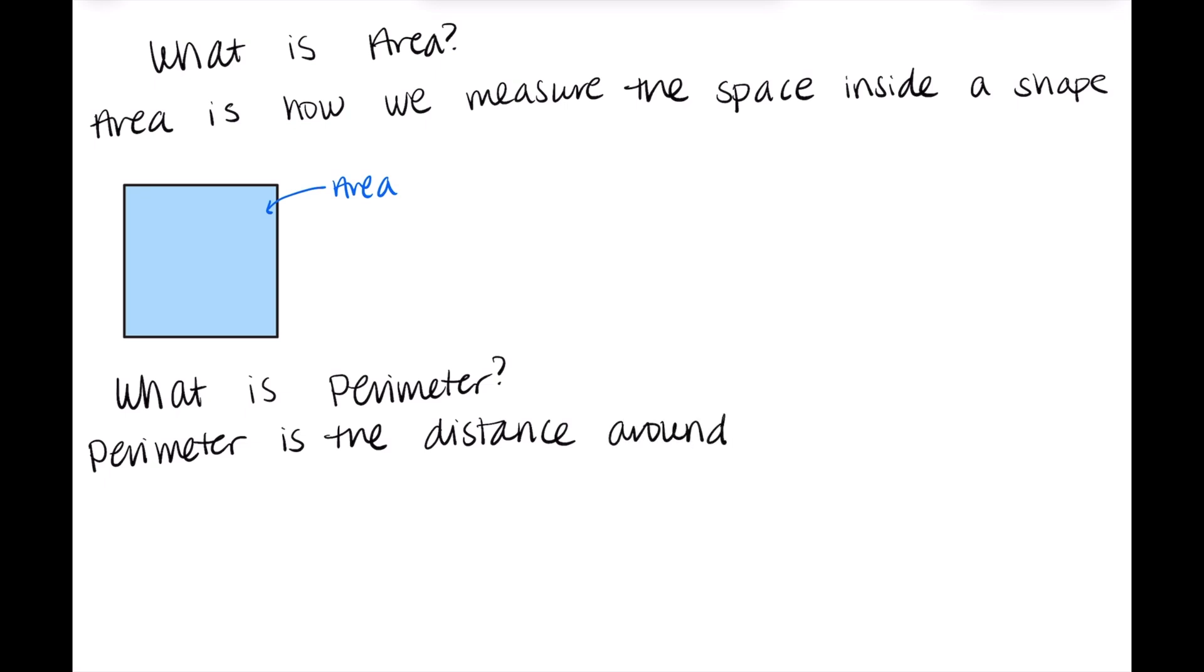Perimeter is the distance around the edge of a shape. So looking back at that example that we have above, that blue outline, which I've also followed through with you guys again, that whole distance around the shape would be what we would call our perimeter.